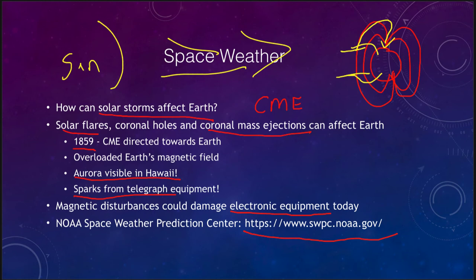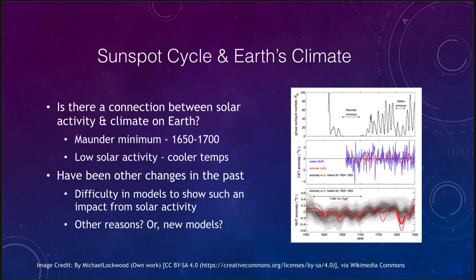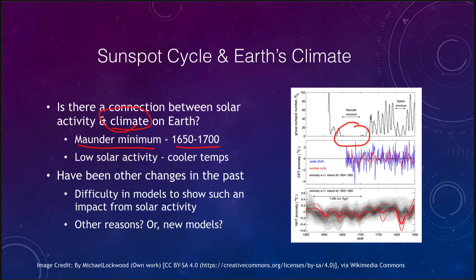Finally, let's look at how solar activity can possibly affect the Earth's climate. Is there a connection between solar activity and climate here on Earth? We know the Maunder Minimum, which occurred in the late 1600s, led to a period of unusually cool weather on Earth — much less heat because of reduced solar activity and less heat energy being generated by the sun. So we know that a low amount of solar activity can mean cooler temperatures, corresponding to what is called the Little Ice Age.